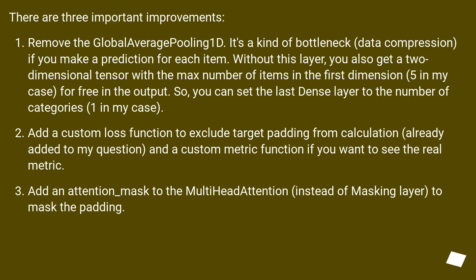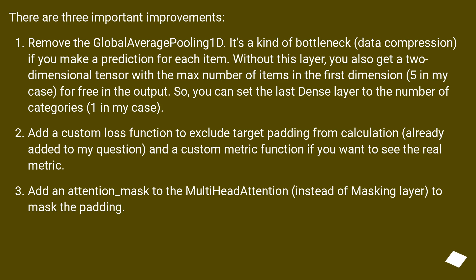There are three important improvements. First, remove the Global Average Pooling 1D. It's a kind of bottleneck — data compression — if you make a prediction for each item. Without this layer, you also get a two-dimensional tensor with the max number of items in the first dimension (five in my case) for free in the output. So you can set the last dense layer to the number of categories, one in my case.